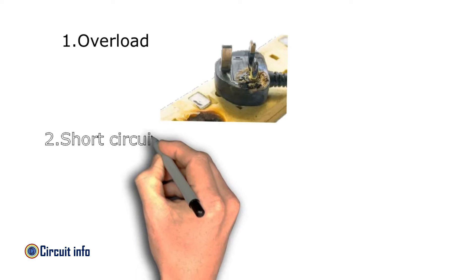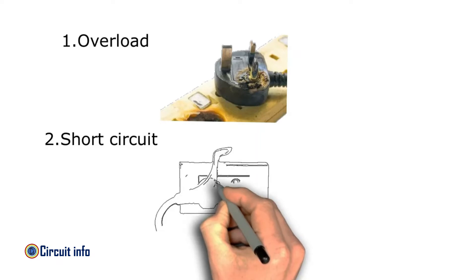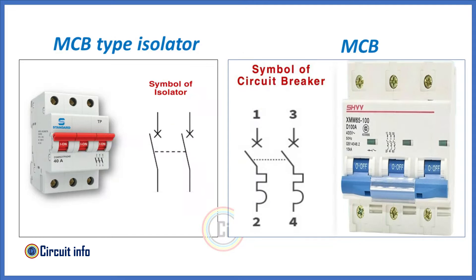One more thing — the MCB and isolator both look almost the same. You can find various types of isolators, but this MCB-type isolator looks exactly the same as an MCB. MCB is rated for current of more than 100 amperes, and the trip characteristics are normally not adjustable.